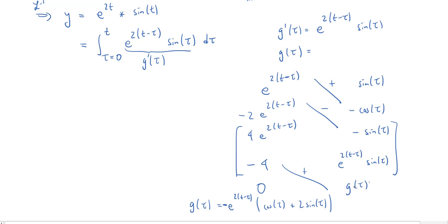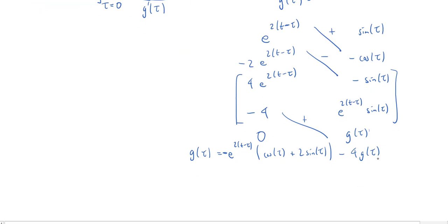And then down at the bottom we have minus 4 times g(tau). We add the minus 4 g(tau) to the left, which will give us 5 g(tau). Just chomping at the bit so I can divide by 5. So I divide by 5 and that will solve for g(tau). So g(tau) is going to equal 1 over 5, oh there's a negative, e^(2(t - tau)), and then we have cosine of tau plus 2 sine of tau.